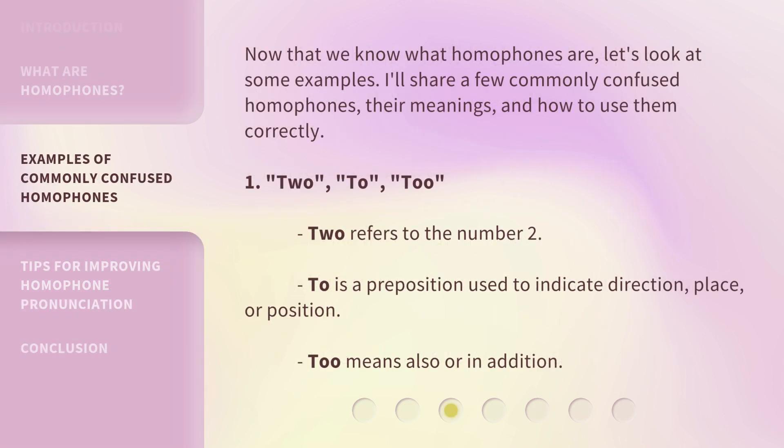Now that we know what homophones are, let's look at some examples. I'll share a few commonly confused homophones, their meanings, and how to use them correctly. One: 'two' refers to the number two. 'To' is a preposition used to indicate direction, place, or position. 'Too' means also or in addition.